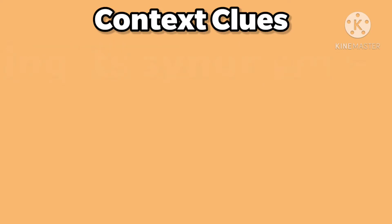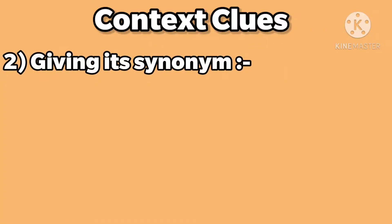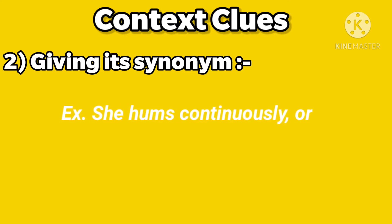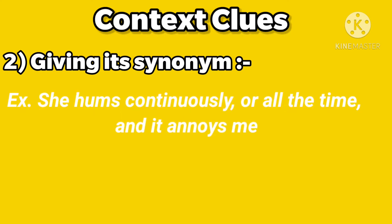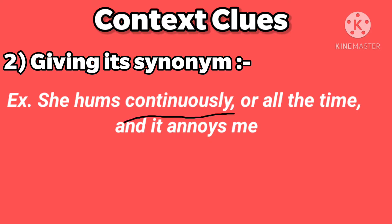The next method is giving its synonyms. Using synonyms, we can find out the meaning. Let's see the example: 'he hums continuously or all the time and it annoys me.' Here 'continuously' and 'all the time' are synonyms, helping us find the meaning.